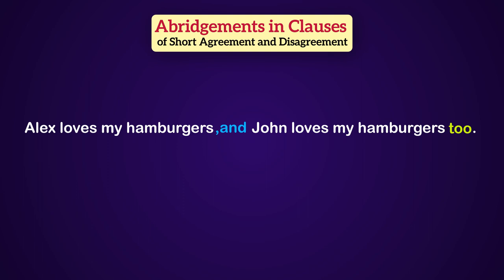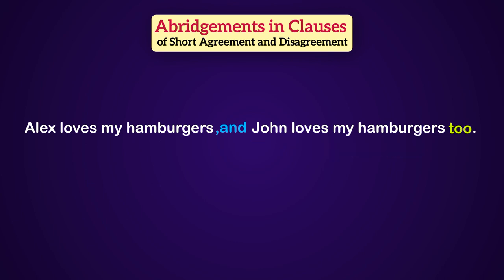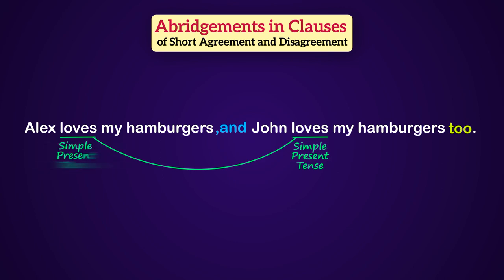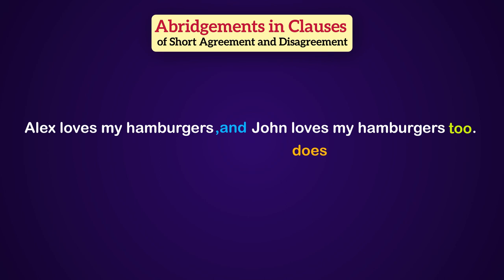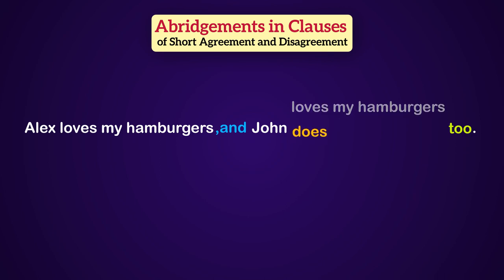Now we can also do something else here, which makes it sound more natural. We can abridge the second clause. Basically, we can do it with an auxiliary. First, we have to identify the tense of the second clause. Here, the tense is simple present tense, which is parallel with the first clause. What is the auxiliary used for singular third person in simple present tense? That's right — it is 'does.' So we replace the whole predicate of the second clause with 'does': Alex loves my hamburgers, and John does too.